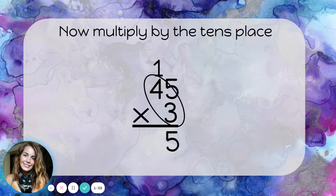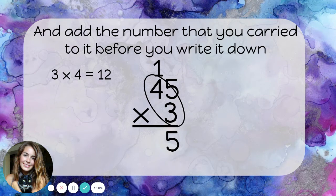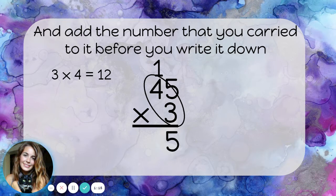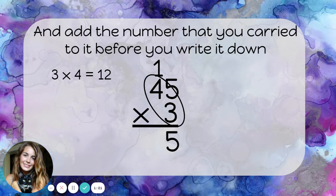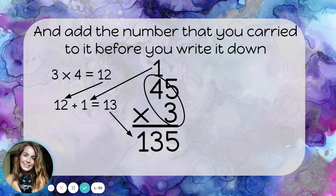Now, I'll multiply by the tens place. 3 times 4 is 12. And I'm going to add that number that I carried to my product of 12 before I write it down. So, first I multiply. 3 times 4 is 12. Then, I add what I carried. 12 plus 1 is 13.